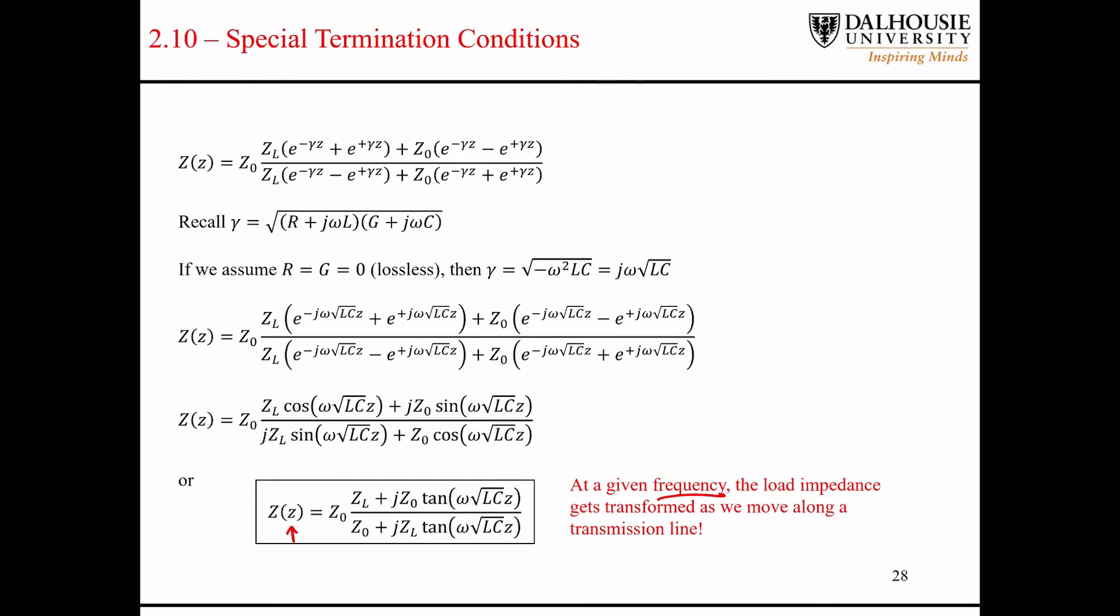So like I said, at a given frequency, if we have a transmission line connected to some kind of load, and we define our coordinate system like this, then at z1, we're going to have one impedance, and then at another position, say z2, we're going to have a different impedance, and they may not be equal to each other.